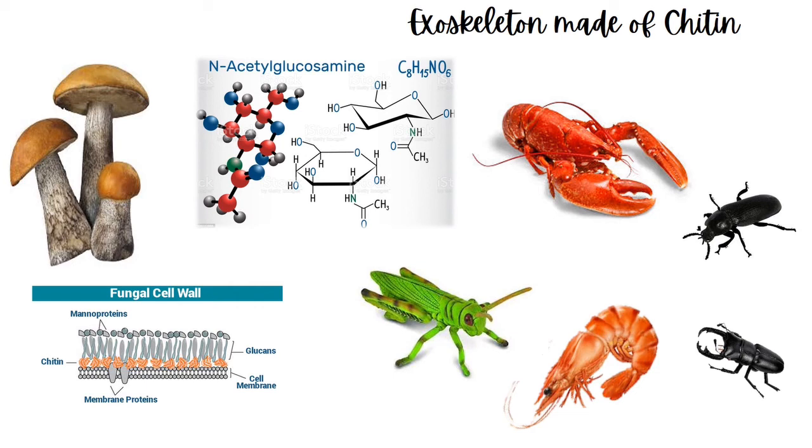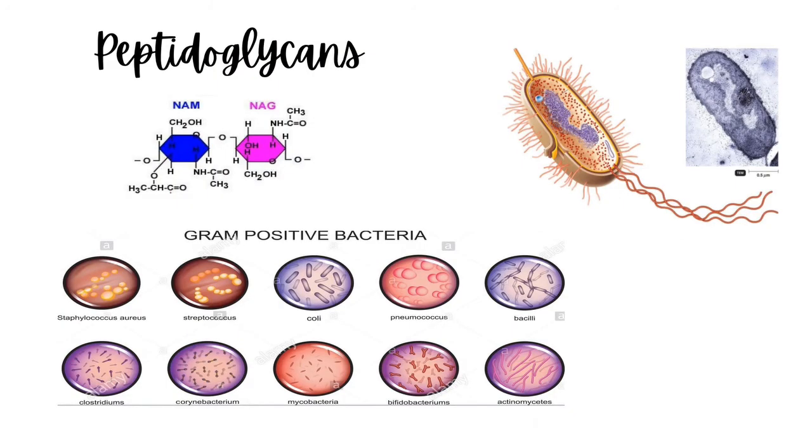Other than chitin, another form of polysaccharides is peptidoglycans. Peptidoglycans are complex polysaccharides found in macromolecules. These macromolecules are flexible and rugged. What is remarkable about peptidoglycans is that they can be found in the bacterial cell wall, and each monomer has a peptide chain attached to it.